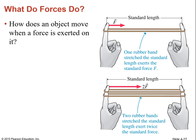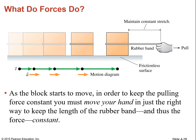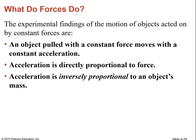How does an object move when a force is exerted on it? A force creates a change in motion. An object pulled with a constant force moves with a constant acceleration — not a constant velocity. So it is constantly speeding up if the force is in the direction of motion. If the force goes opposite, it's slowing down at a constant rate.